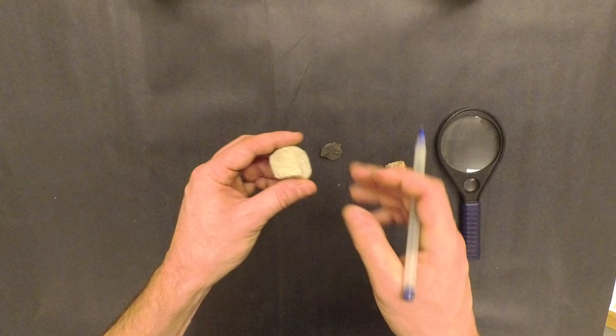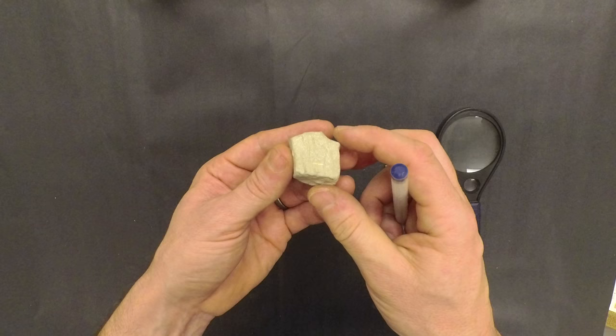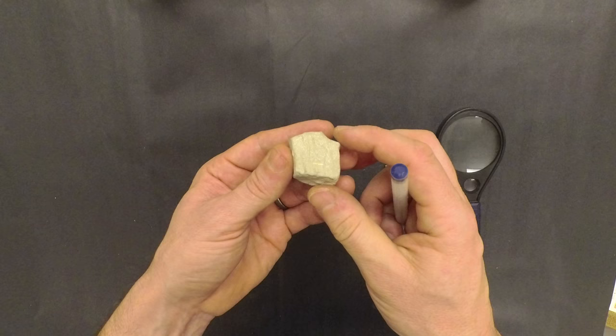That's medium or small. And then small or very small grains would be ones that you can't even necessarily see, even with the hand lens. Your job now is to study the rocks that you were given and determine the grain size of each one.